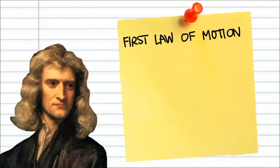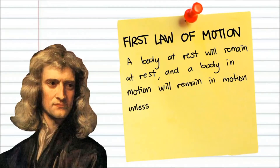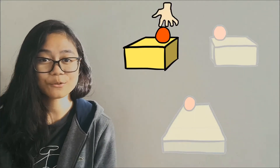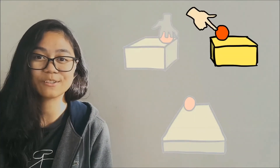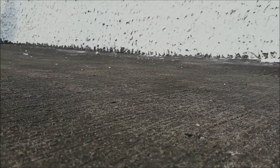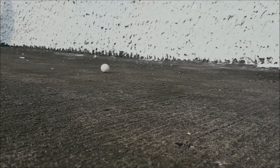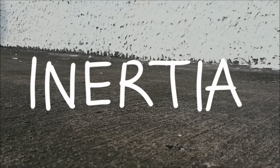The first law of motion states that a body at rest will remain at rest, and a body in motion will remain in motion unless it is acted upon by an external force. Basically, an object cannot start, stop, or go in a different direction by themselves. Some force acting on them needs to do this. A ball rolling down a hill will keep rolling unless friction or another force stops it. This is an example of Newton's first law.